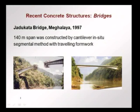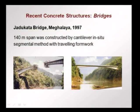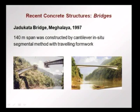This is again a very elegant structure from Meghalaya — the Jadukata bridge, built in 1997. Here you see something that looks like an arch after construction, but it is actually a double cantilever bridge. You can see both halves cantilevering out during construction. This was built in a segmental manner with travelling formwork — the formwork is extended after each section of concreting is done. It covers a span of 140 metres, and you can see how elegant the structure looks after construction.